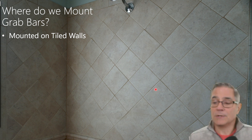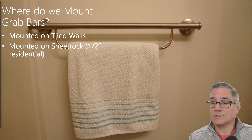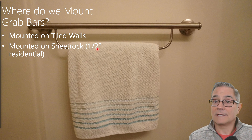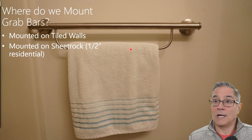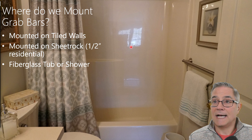Grab bars are typically mounted on tile surface walls. In residential settings, that's half-inch sheetrock. Here's an actual grab bar in my bathroom — a multifunction bar mounted before you go into the tub. I like that I can still put my towel on a towel bar nearby, but realize you never want to pull on a regular towel bar since it won't support the weight — the grab bar will. We'll also talk about fiberglass tubs and showers and how to mount grab bars in those.